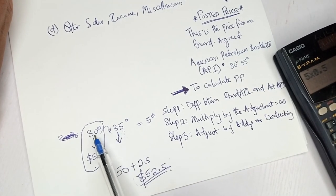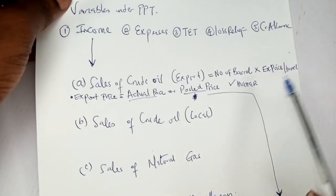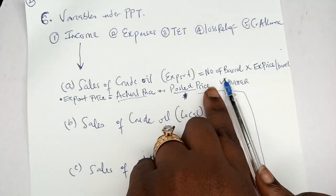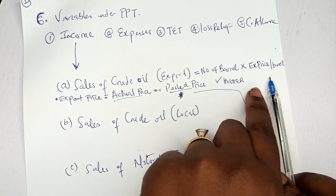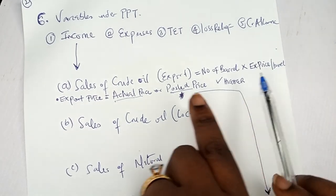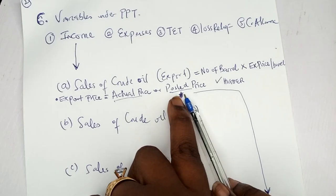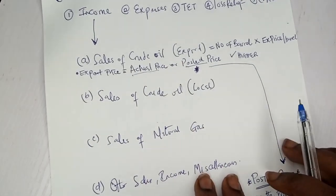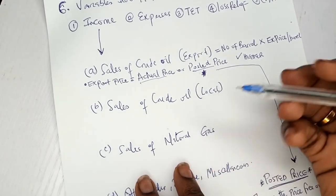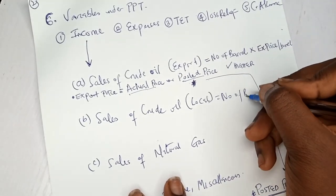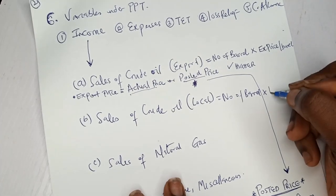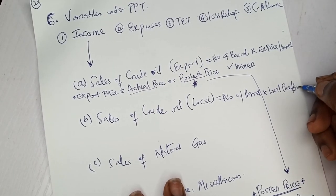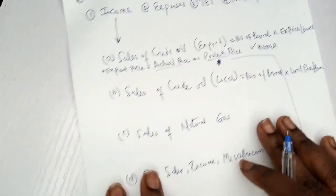Once you have the posted price, compare it with the actual price and pick the higher one — that is your export price for the crude oil calculation. For sale of local crude oil, the formula is simply: number of barrels multiplied by the local or domestic price per barrel. No posted price drama is involved for domestic sales.